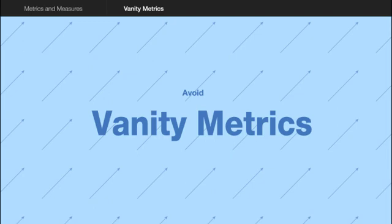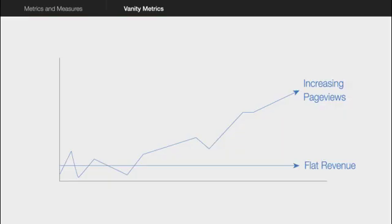Another tip to remember is to avoid vanity metrics. These are metrics that make you feel good but are not really linked to the outcome you're trying to drive. For example, if you measure the number of page views on your website, yes it may be getting better, but it doesn't mean they're actually converting to sales and your revenue may still be flat. Make sure the metrics you have are really driving your goals and objectives and are linked to them — if they're not, they could be just vanity metrics.